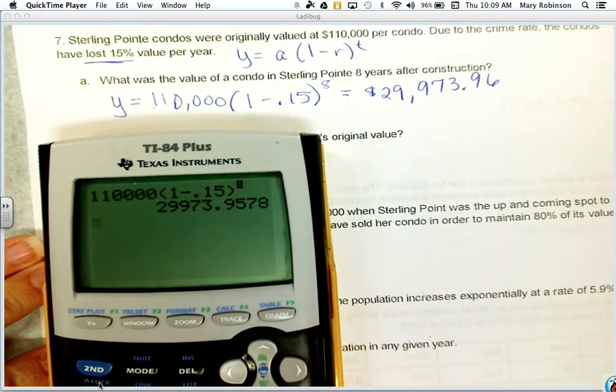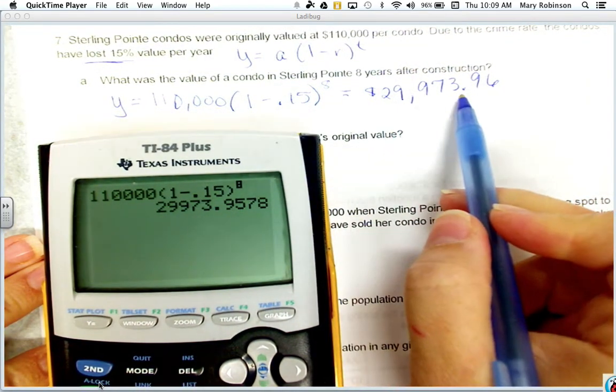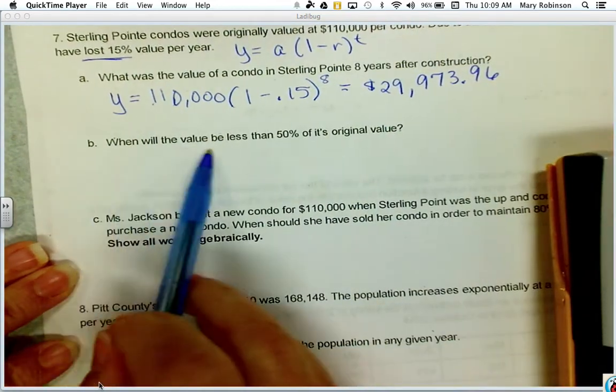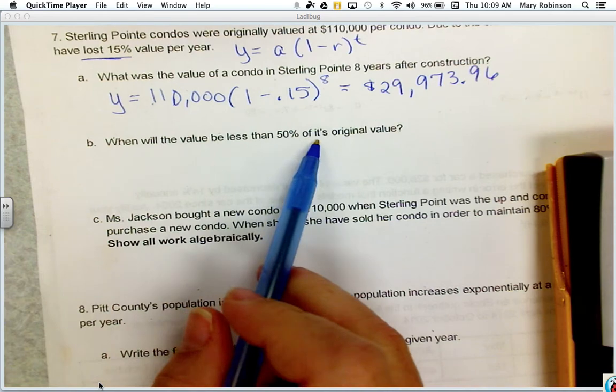Because we're talking about money, be sure to use your dollar sign and round to the hundredths place. It now says, when will the value be less than 50% of its original value?